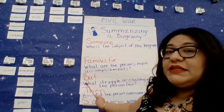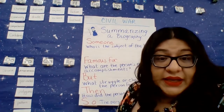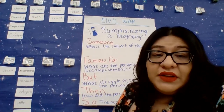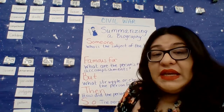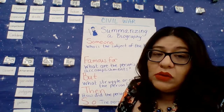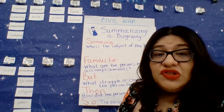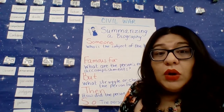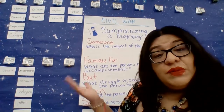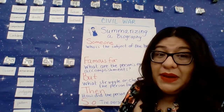The next part is the 'but.' What struggle or challenges did the person face? A lot of our friends in these biographies have had challenges. What did they face? How did they face them, and how did they come out of those challenges? Sojourner Truth's biggest challenge was that her children were about to be sold to different families in the south, and she was a free slave in the north — you can see how that could be a really big problem.